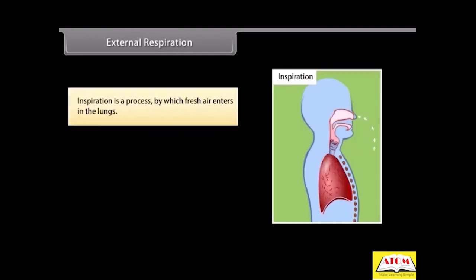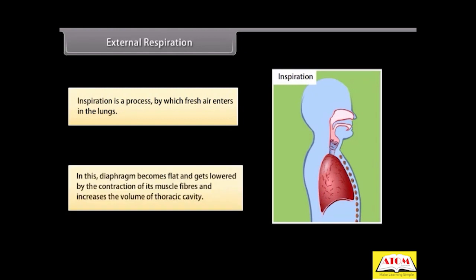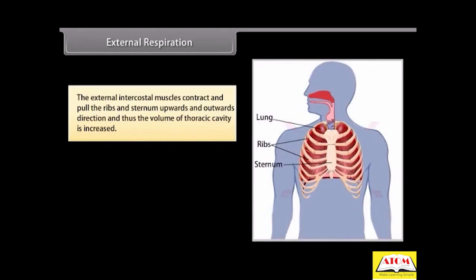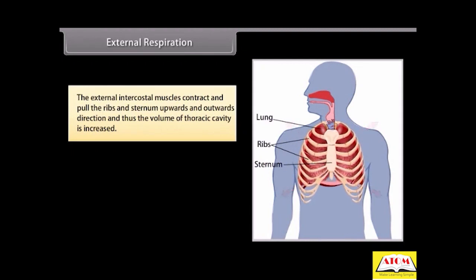Inspiration is a process by which fresh air enters the lungs. In this, the diaphragm becomes flat and gets lowered by the contraction of its muscle fibers and increases the volume of the thoracic cavity. The external intercostal muscles contract and pull the ribs and sternum upwards and outwards, and thus the volume of thoracic cavity is increased.